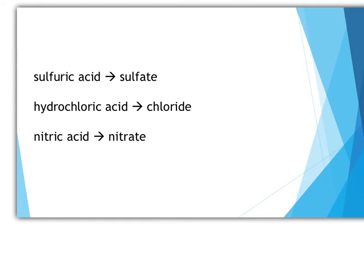The name of the salt formed depends upon the acid used. So if I want to make some copper sulphate I need to use sulphuric acid. If I want to make some sodium chloride the acid I must use is hydrochloric acid. If I want to make some potassium nitrate then I must use nitric acid.